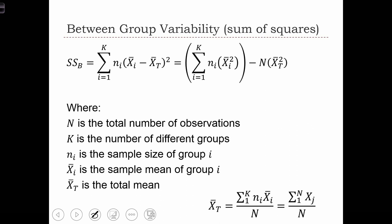In order to calculate the ANOVA statistic, we need to compute the between-group and within-group sums of squares, or the between-group and within-group variabilities. In this equation, we have the sum of squares B — the sum of squares for between the groups. We're looking at the sum from 1 to k, where k is the number of different groups. In our case, we had three different groups.